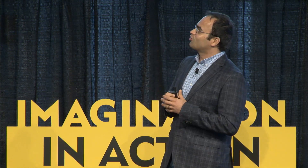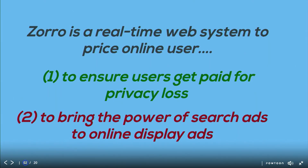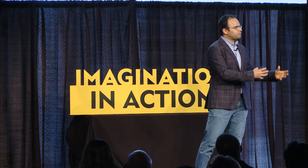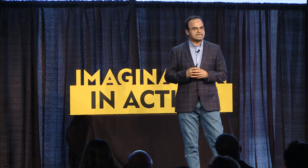Zorro is a real-time web system that helps price online data. On one hand, it allows users to get paid for the loss of privacy of the data they give out. On the other hand, from the advertiser's perspective, unlike display ads — which are extremely noisy — and search ads — which are extremely powerful because of the clarity of intent — we want to convert display ad pages to search ad intent.